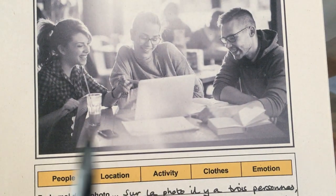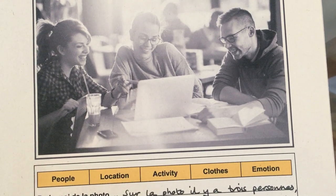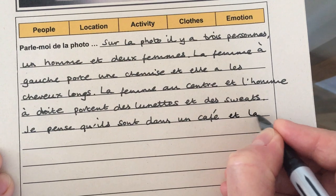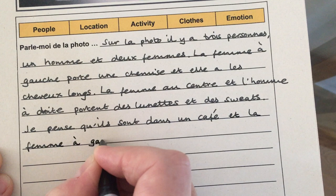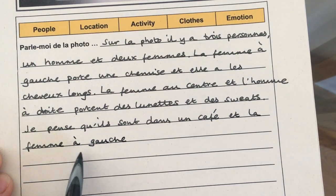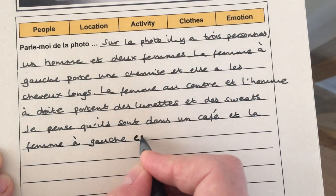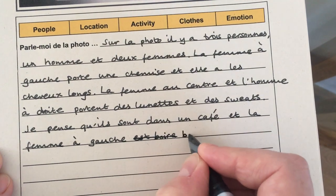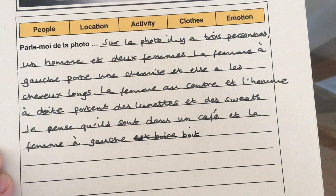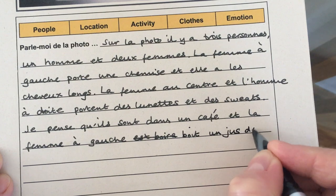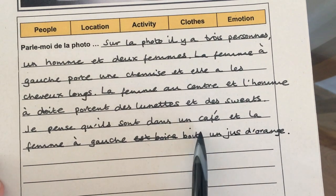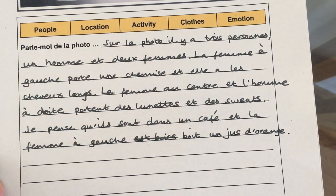Then I'm going to look back at the photo and talk about the woman — she's drinking. I'm going to say that's a fruit juice. I'm talking again about the woman on the left. I want to say she is drinking. All I need to say is 'boit', because that means 'drinks' or 'is drinking'. 'Un jus' might be an orange juice. So: 'Je pense qu'ils sont dans un café. Et la femme à gauche boit un jus d'orange.' I'm going to leave that there in terms of location.